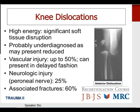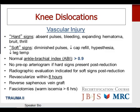Hard signs of vascular injury include absent pulses, bleeding, expanding hematoma, and the presence of a bruit or thrill. Soft signs include diminished pulses, decreased capillary refill, hypoesthesia of the extremity, or decreased temperature of the leg. The normal ankle-brachial index should be greater than 0.9; if less than 0.9, the patient needs further evaluation for vascular injury. If hard signs are present once the knee is reduced, no preoperative vascular study is needed — the patient should go directly to the OR for vascular exploration and repair. For soft signs, additional radiographic workup is indicated.